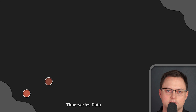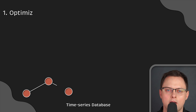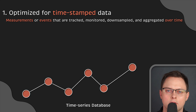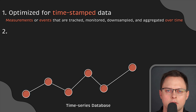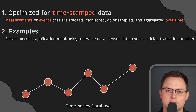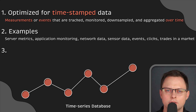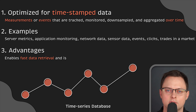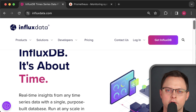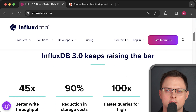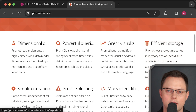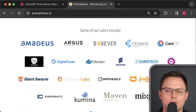Finally, let's take a look at time series databases. Optimized for timestamped or time series data, these databases handle measurements of events that are tracked, monitored, downsampled, and aggregated over time. This could include server metrics, application performance monitoring, network data, sensor data, events, clicks, trades in the market, and many other types of analytics data. Time series databases are used over traditional types because they enable fast data retrieval and are a cost-effective storage solution for that type of data. One example of a general-purpose metrics database is InfluxDB. Prometheus is also frequently used to collect time series data from infrastructure and is a time series database with additional features to query targets such as VMs and Kubernetes pods.